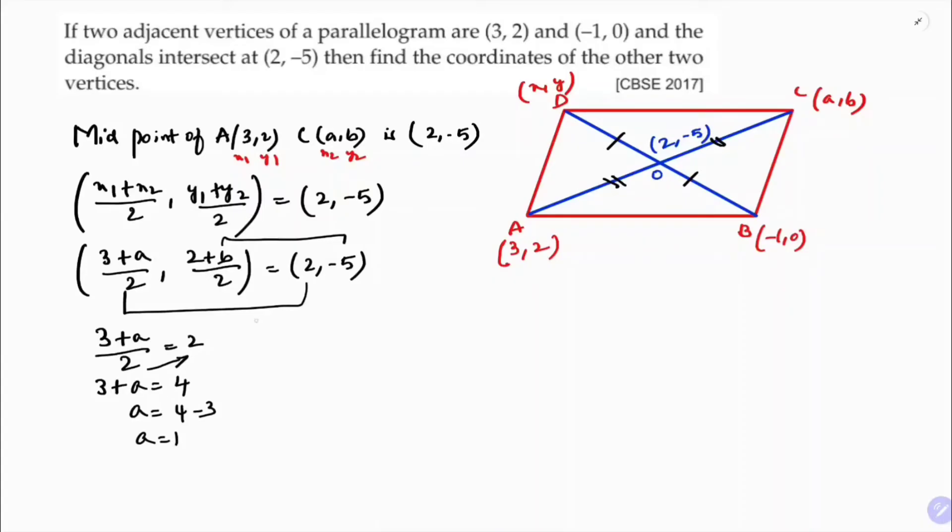Next, if I equate ordinate with ordinate, (2+b)/2 = -5. So 2+b = -10, because 2 times -5. If I transpose, -10 and +2, so b value is -12. Therefore the vertex C is (a,b), which is (1,-12).